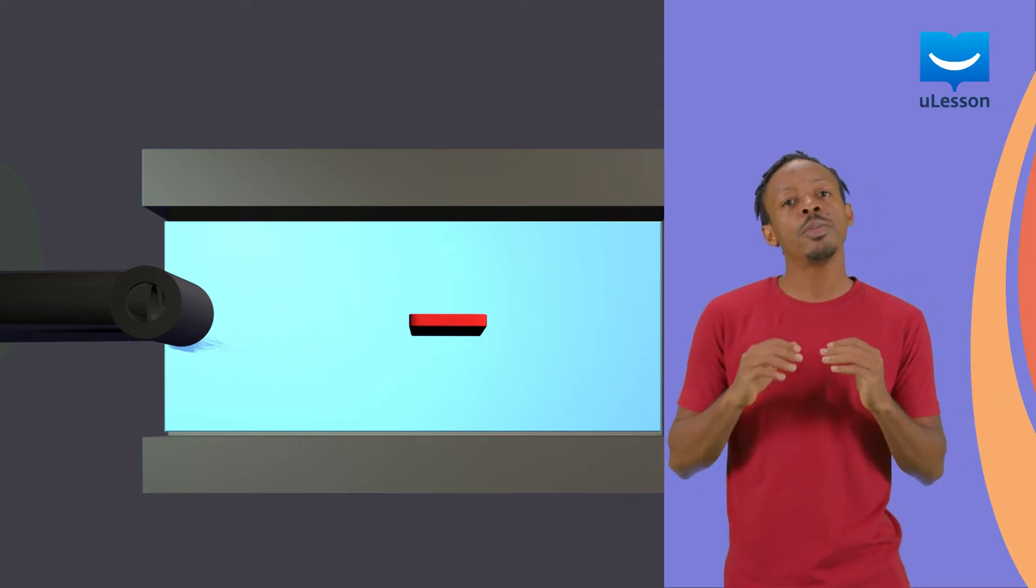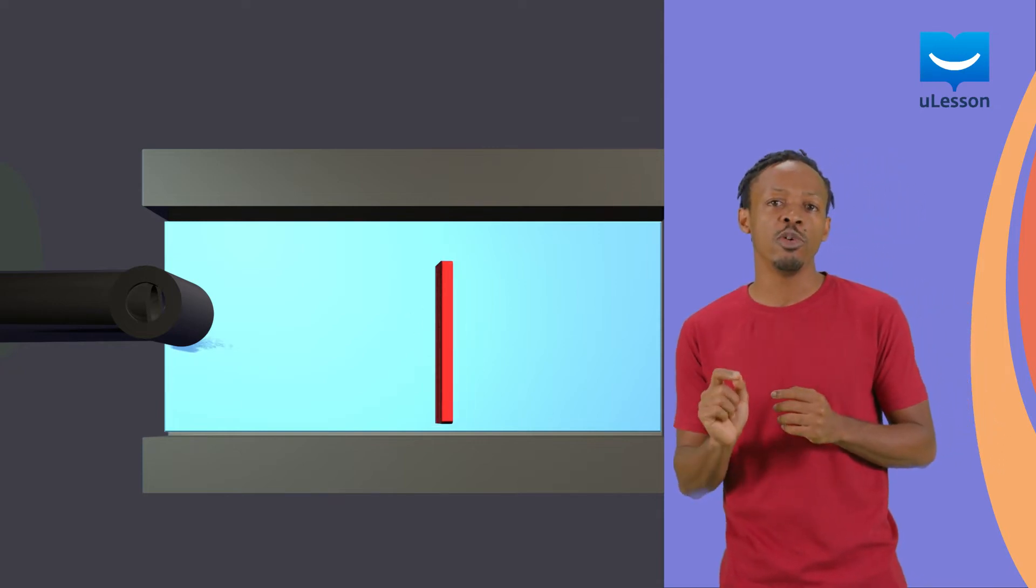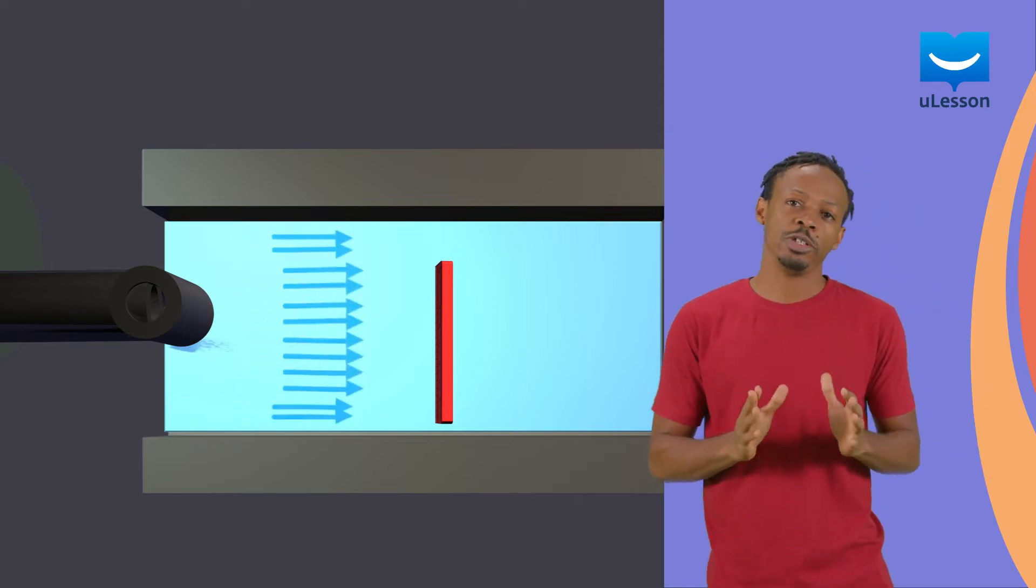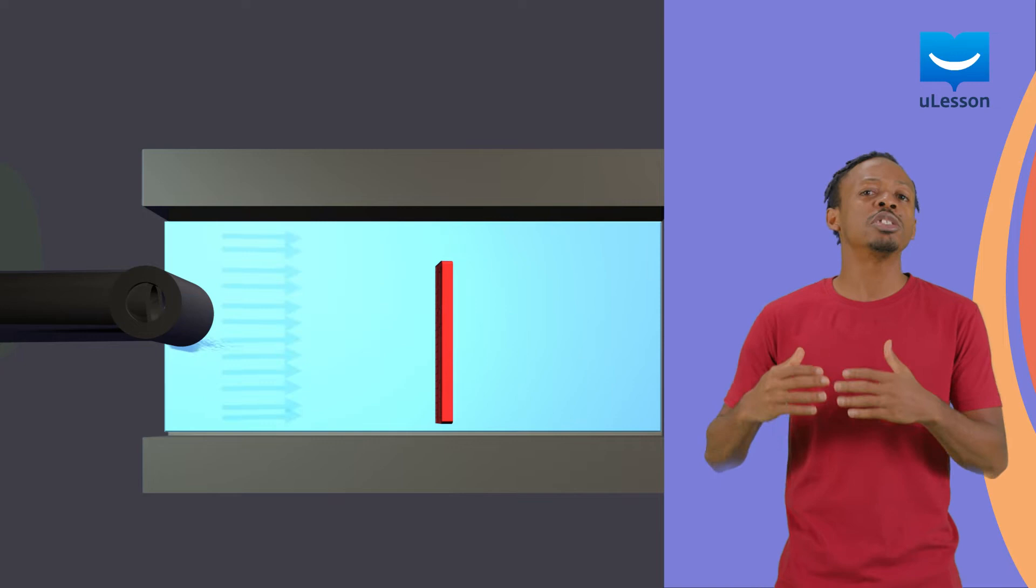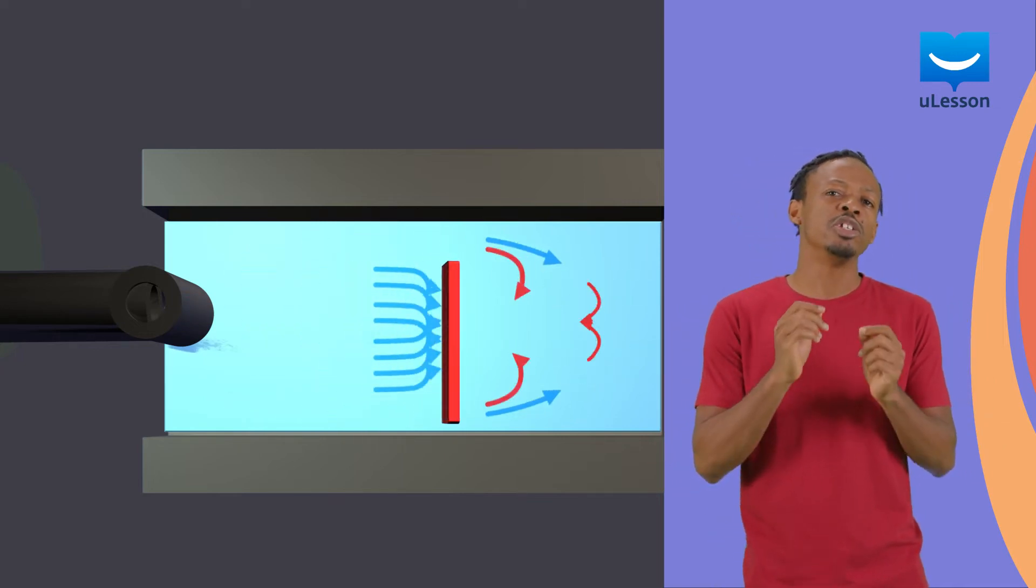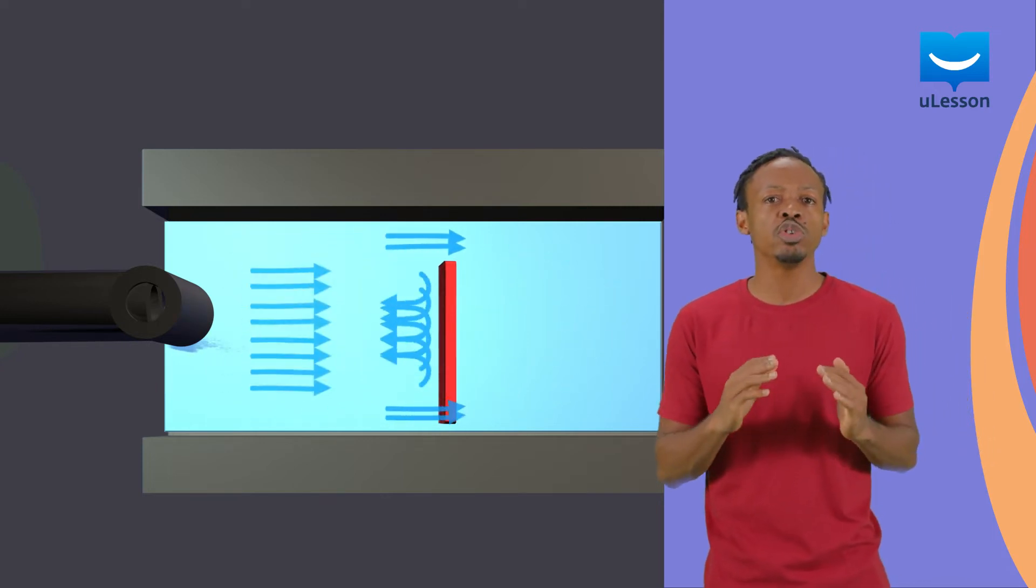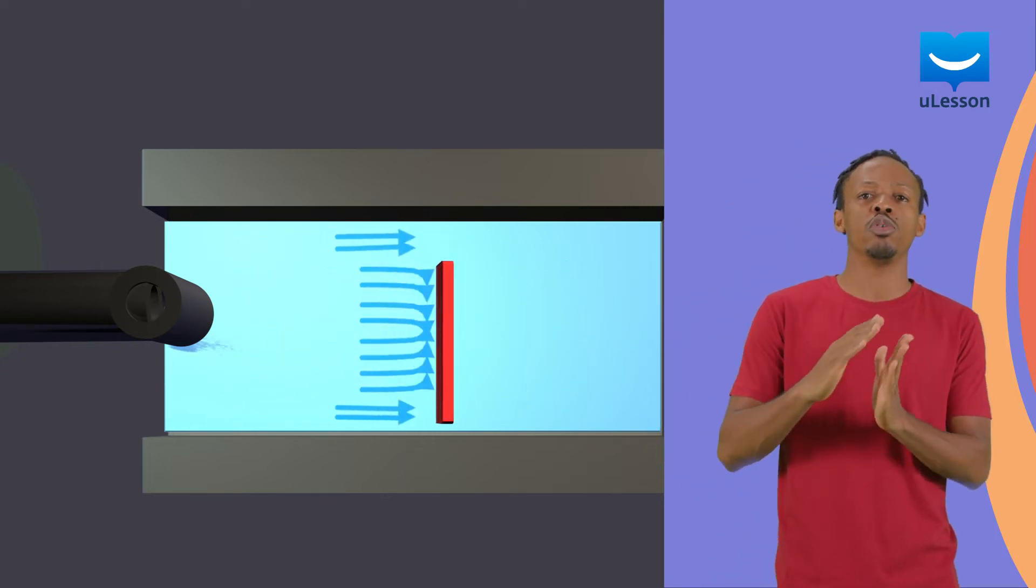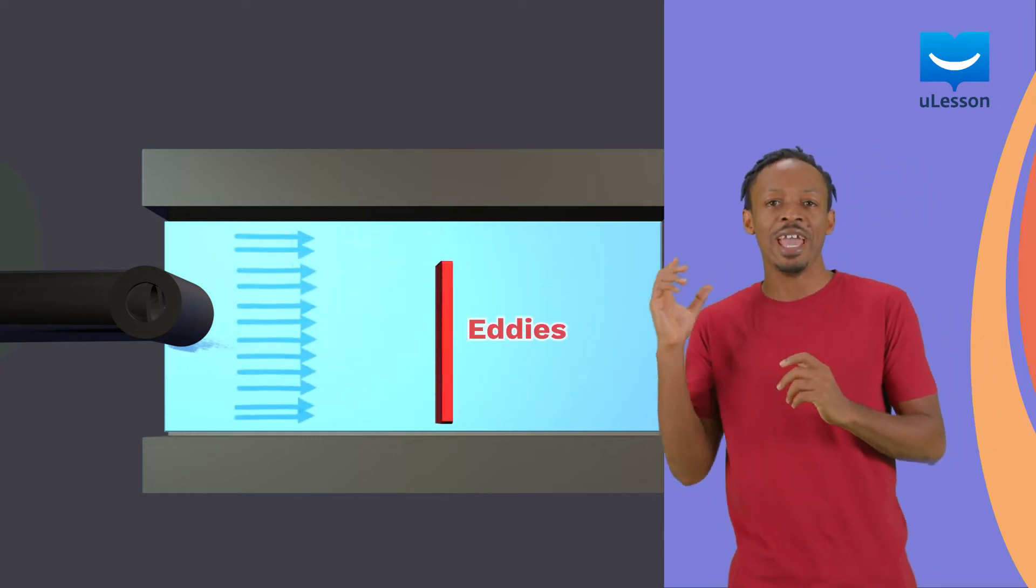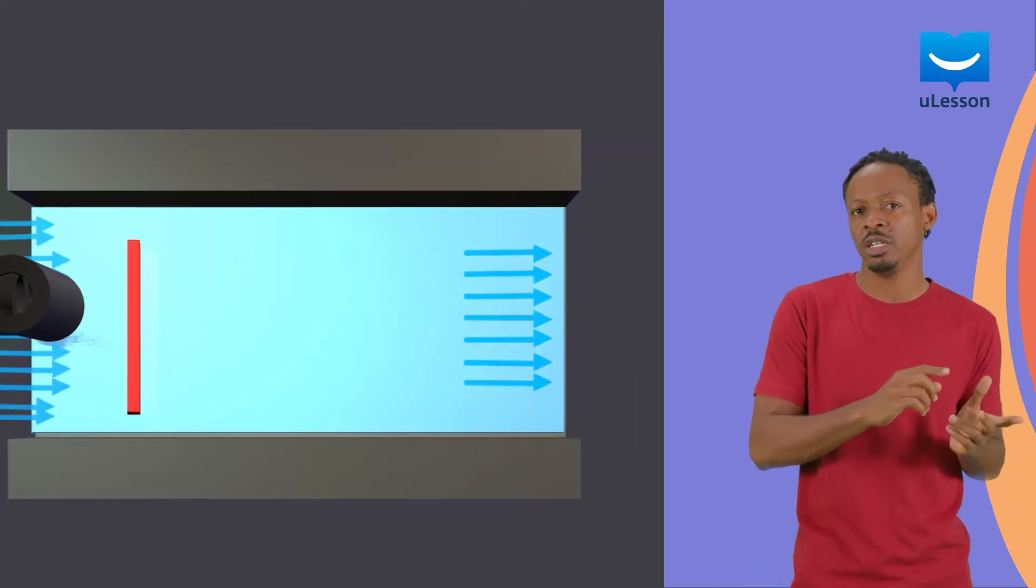Next, place the ruler's flat end perpendicular to the flow of water and two new effects can be observed. First, this orientation causes the flow of water around the object to become turbulent just after rounding the object. The streamlines do not immediately return to their original path but swirl around forming eddies. Laminar flow only resumes further down in the channel.